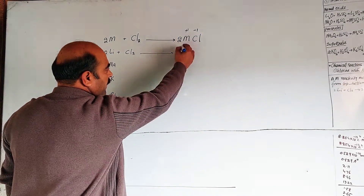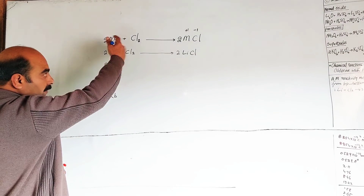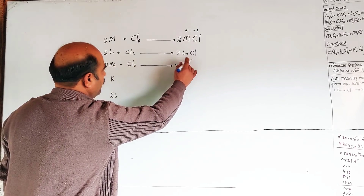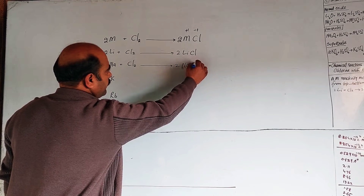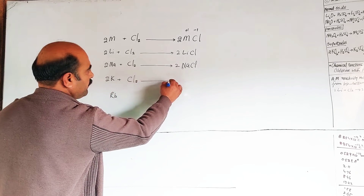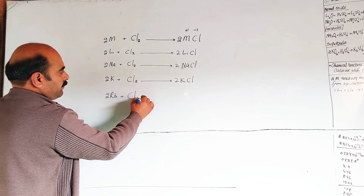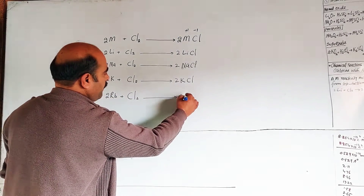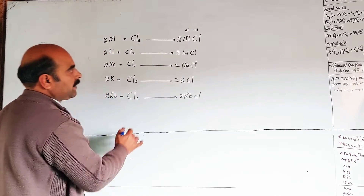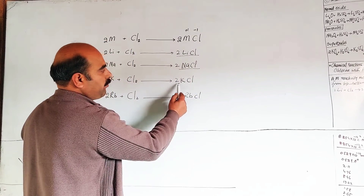For example, take a metal like lithium: 2Li + Cl₂ → 2LiCl. The equation is balanced — two moles of potassium with Cl₂ gives two moles of potassium chloride. Similarly Rb + Cl₂ and so on.